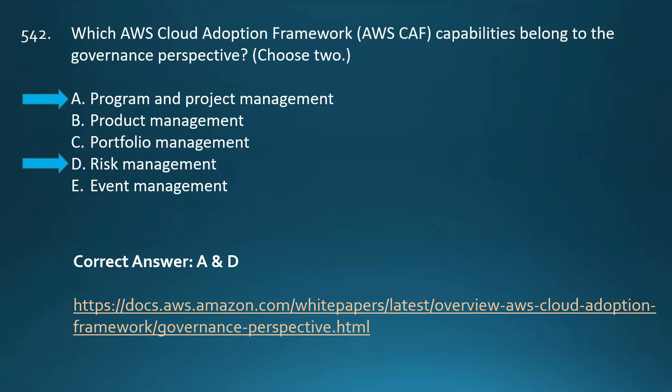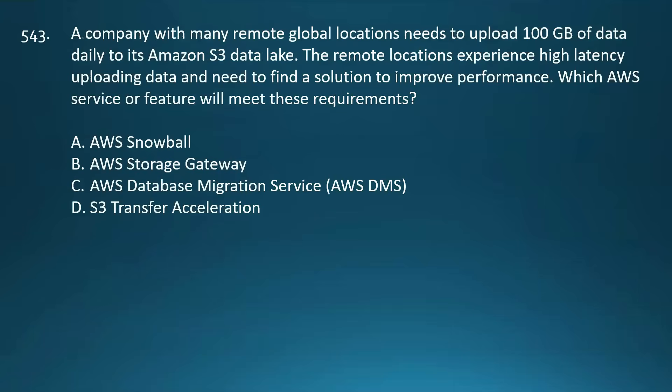Question number 543. A company with many remote global locations needs to upload 100 GB of data daily to its Amazon S3 data lake. The remote locations experience high latency uploading data and need a solution to improve performance. Which AWS service or feature will meet these requirements? Your options are AWS Snowball, AWS Storage Gateway, AWS Database Migration Service, and S3 Transfer Acceleration.